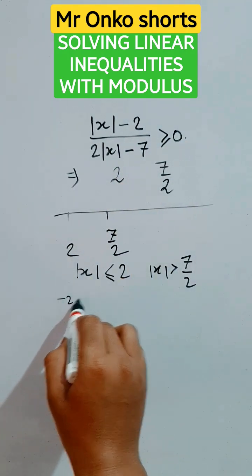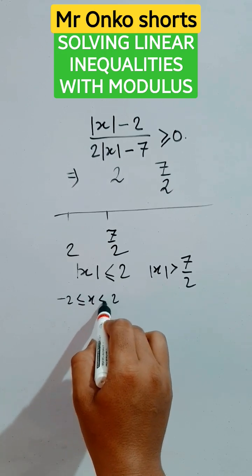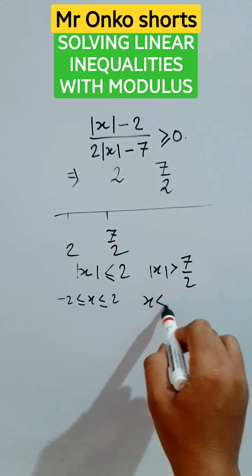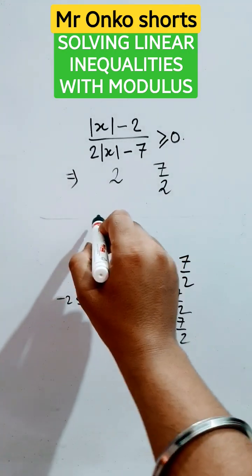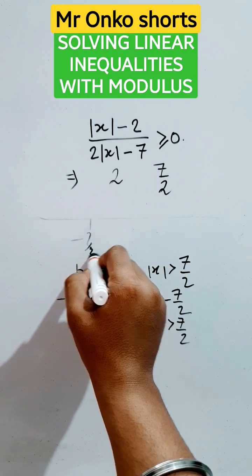In this case we got minus 2 to 2. x will lie in between the closed interval, and here x will be less than minus 7 by 2 and greater than 7 by 2. Again, draw the number line and here it is minus 7 by 2.